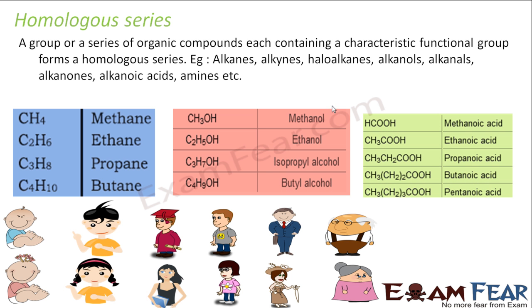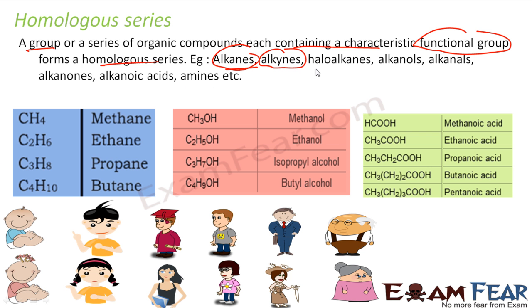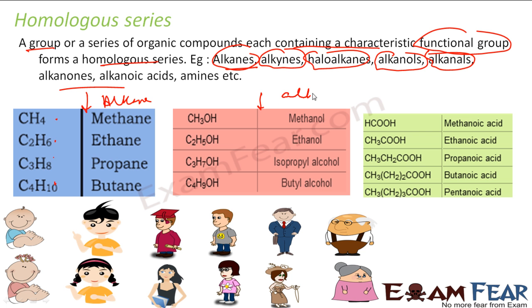Let's start with homologous series. Functional groups have a peculiar characteristic, and this is the homologous series. A group or series of organic compounds, each containing a particular functional group, forms a homologous series. For example, alkanes form a homologous series: methane, ethane, propane, butane. Alkanols are another homologous series: methanol, ethanol, propanol, butanol. Alkanoic acids are also a homologous series: methanoic, ethanoic, propanoic, butanoic, pentanoic acid.